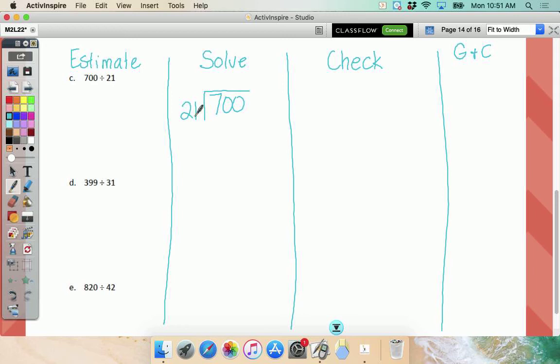Now, the next thing I want to do is I want to look at the first two numbers of the dividend. Can I make 21 groups out of 70? Totally. So that means I'm putting a box around that. Now, I only have to skip count to 70. What do you want to skip count by? 21.